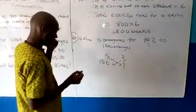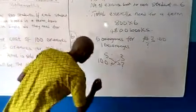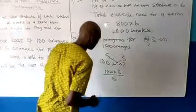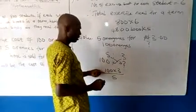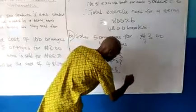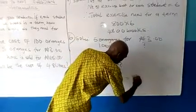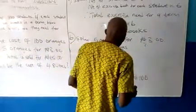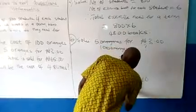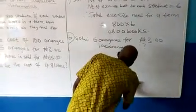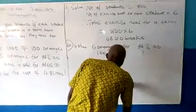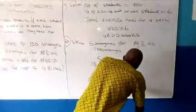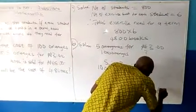I put my sign of cross multiplication. And I say 100 times 30 all over 5. 100 times 30 will give us 300. 300 divided by 5. Now we have 300 over 5.